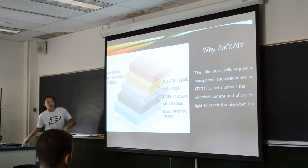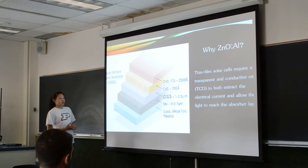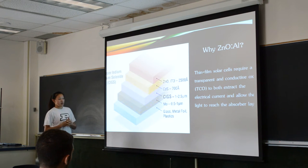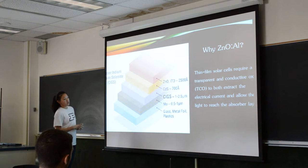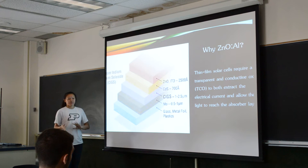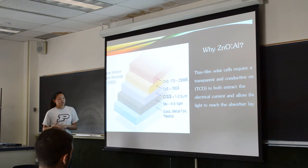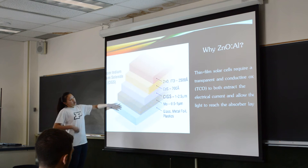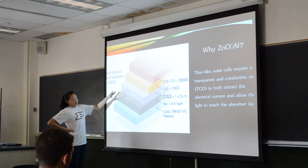So why Aluminum-Doped Zinc Oxide? It is the transparent conducting oxide layer of a CIGS cell, which is copper, indium, gallium, selenide. It's among a few different solar cells, and it's thin film because there are different layers to the actual solar cell.